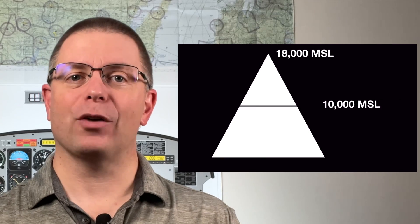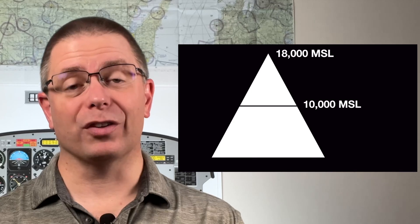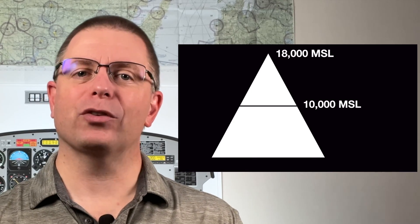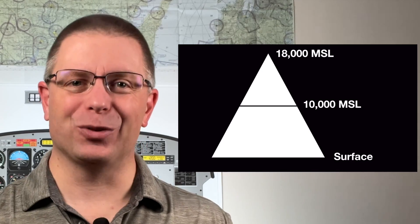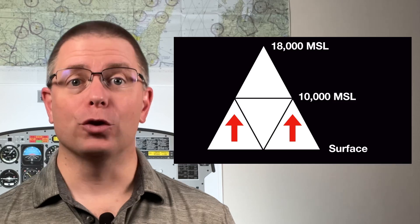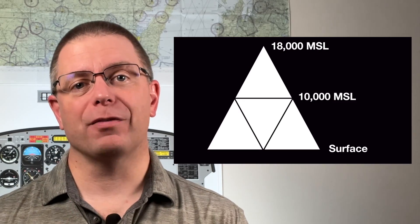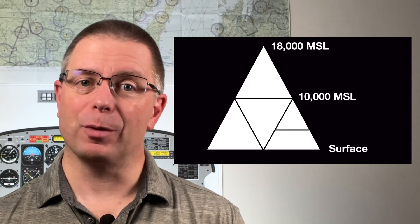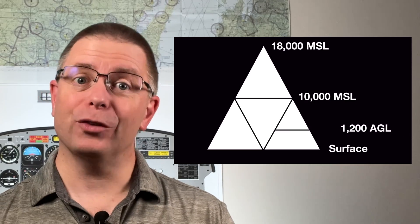The middle line represents 10,000 feet MSL and we'll label this now and explain why it's important in a little bit. The base of the triangle represents ground level. We'll identify this not only because we don't want to run into it accidentally, but because there are a couple of features we'll want to remember. Next, divide the bottom half of the triangle into three smaller triangles — two pointing up and one pointing down. In the far right triangle, draw a line dividing the triangle in half from top to bottom. This line represents 1,200 feet above ground level and we'll label this too.